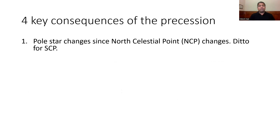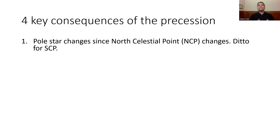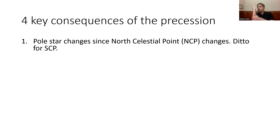Now we look at the four consequences of precession. The first three we have already covered in previous parts. The pole star changes because the north celestial point is changing — that's the precession of the Earth's axis making a circle in the sky. Pay attention, because consequence number four has to do with this change — specifically consequence number one, and to some sense number two, but you definitely need to understand consequence number one.